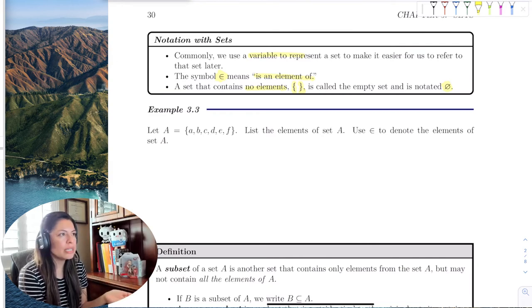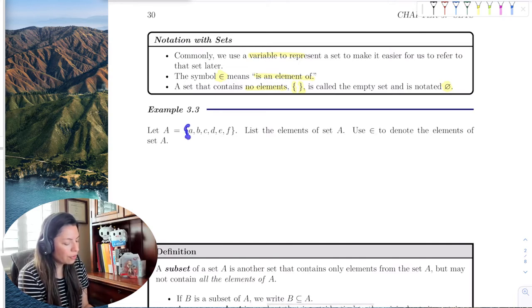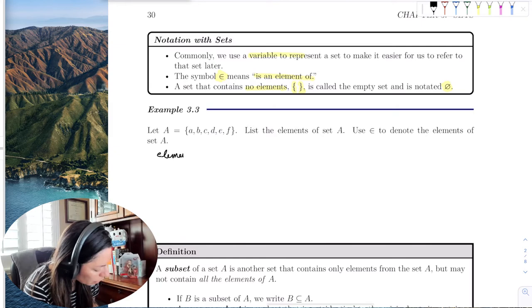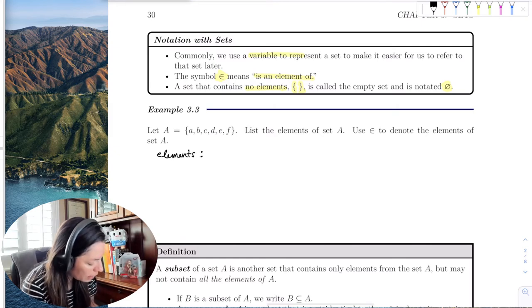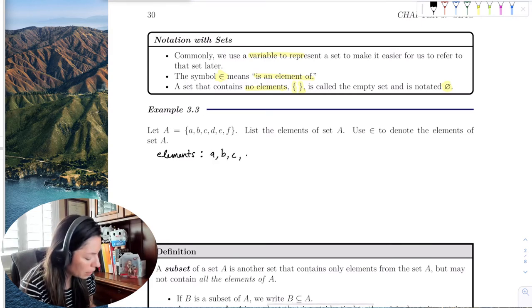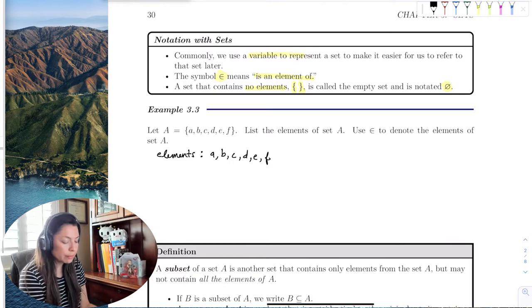Okay, so if I just take a simple set, like notice that here the set is called a variable, capital A - we usually denote it by capital letters. So A is the set of A, B, C, D, E, F. Let's list the elements in the set. So the elements of the set are actually what's listed in the curly brackets. So that would be A, B, C, D, E, F.